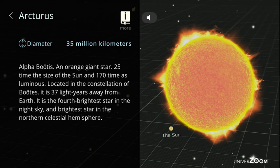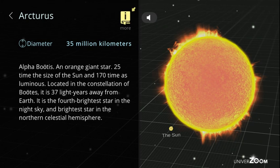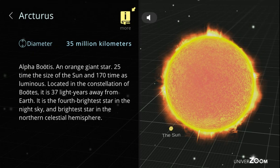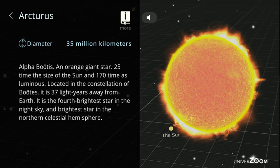Arcturus, diameter: 35 million kilometers. Alpha Boötis, an orange giant star. 25 times the size of the sun and 170 times luminous. Located in the constellation of Boötes, it is 37 light-years away from Earth. It is the fourth brightest star in the night sky and brightest star in the Northern Celestial Hemisphere.